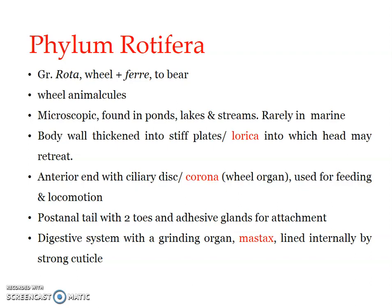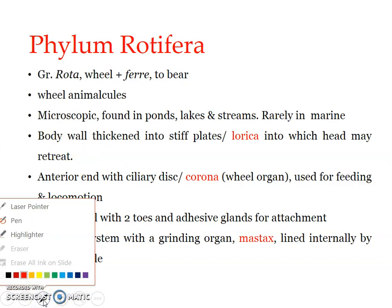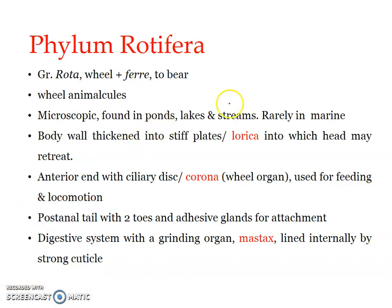Rotifers are bilaterally symmetrical and unsegmented. As already mentioned, they are pseudocoelomate metazoans. The head region is broad with a central disc. The head region has a non-ciliated anterior area known as the apical field, which is the mouth-bearing part. This apical field is encircled by a ciliary zone or ciliary tract known as the corona — a ciliary disc.